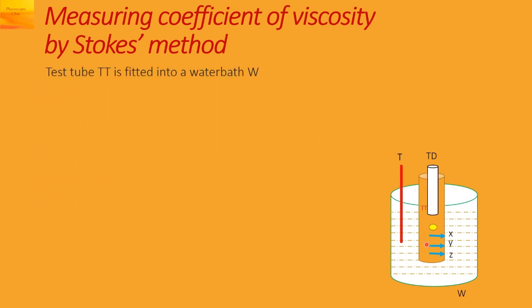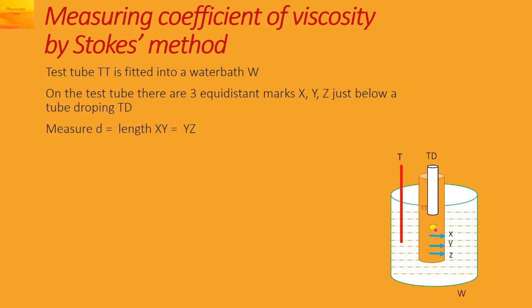So this test tube TT is fitted into this water bath W. On the test tube you can see there are three equidistant marks X, Y, Z just below this tube dropping TD through which you will be dropping the steel ball. We will measure the distance between X-Y and Y-Z. This distance X-Y is equal to Y-Z and we are denoting it as small d.